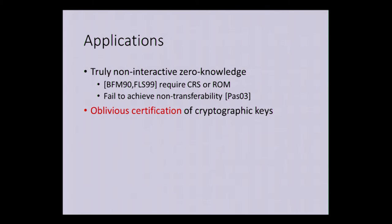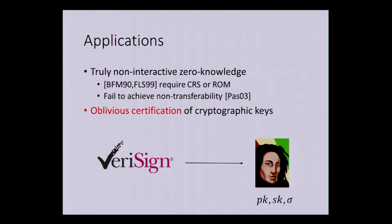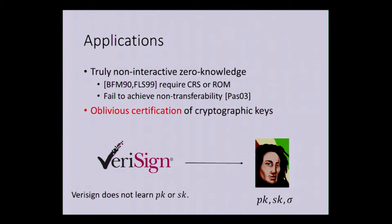The next application is oblivious certification of cryptographic keys. Say we have a company like VeriSign that wants to give Bob a signature on his public key. With this randomized functionality in the noisy setting, VeriSign could just send one message to Bob, and the randomness from the channel would be used to sample the public key and secret key for Bob, along with generating a signature. This gives VeriSign the capability — by sending just one message — to enable Bob to obtain a public key and secret key along with a signature on his public key, while ensuring VeriSign does not learn anything about Bob's keys.